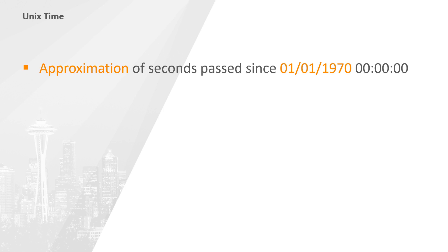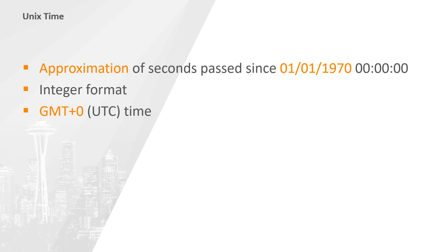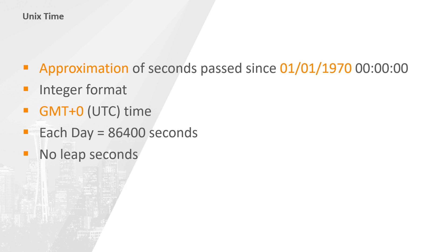In this lecture, we will be performing datetime conversions — more specifically, UNIX datetime conversions. UNIX time, also known as UNIX epoch, is an approximation of the amount of seconds passed since the 1st of January 1970, displayed in integer format. Conversions to and from UNIX time should always use the GMT+0 or UTC timezone. Conversions to your local timezone should happen at a later stage. On a side note, UNIX considers each day to be exactly 86,400 seconds long and as such does not count leap seconds.